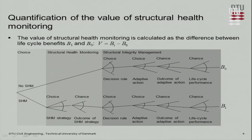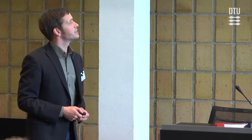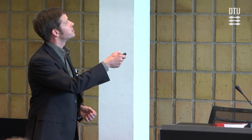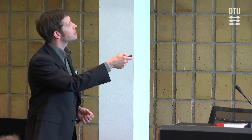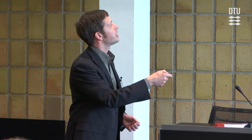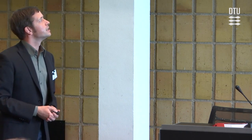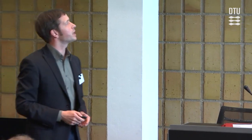The choice of experiment is incorporated here. We take two steps: we have the SHM strategy with its chance outcome, then the decision rule on what to do with the information, adaptive actions, their chance outcomes, and the life cycle performance leading to life cycle benefit B1. If we do not do SHM, we have the structural integrity management decision tree giving life cycle benefit B0. The value of SHM is then B1 minus B0.